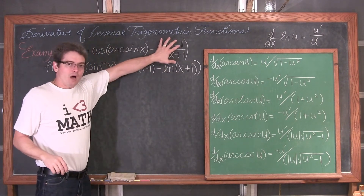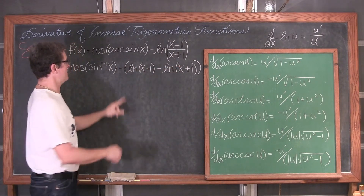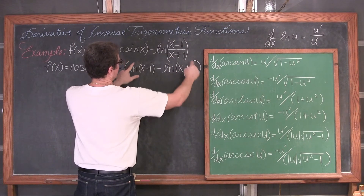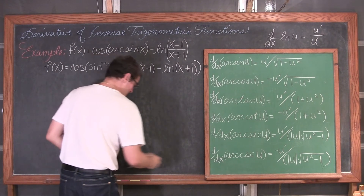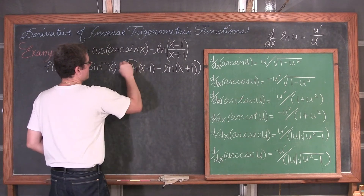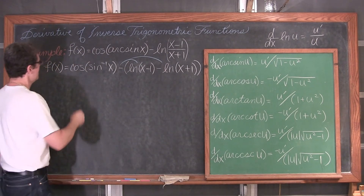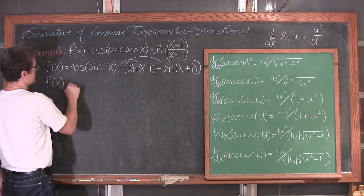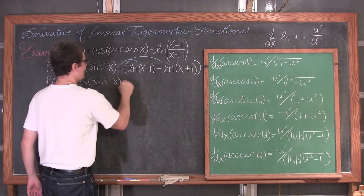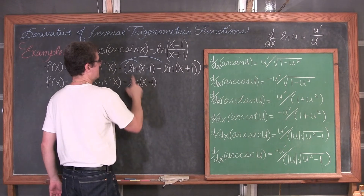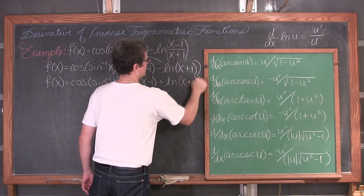So f of x equals cosine of inverse sine of x, minus natural log of x minus 1, and then negative times negative is positive, plus natural log of x plus 1. It is crucial to distribute that negative sign — if you don't, you will do a lot more work and get it wrong.